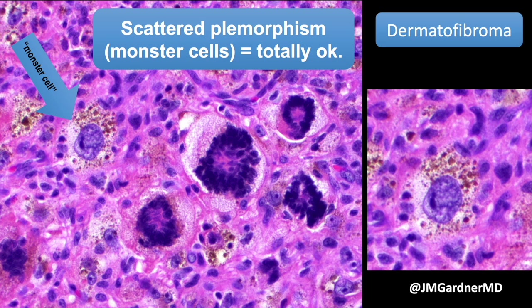If you start seeing numerous atypical cells resembling pleomorphic sarcoma in the middle of a tumor that otherwise looks like a DF, what you're probably dealing with is so-called atypical fibrous histiocytoma or atypical dermatofibroma. These lesions can occasionally metastasize but usually have a good prognosis; they do need complete excision. Chris Fletcher has written about this with the largest series to date. Scattered atypia alone is not enough — you need a lot of atypical cells and atypical mitoses.